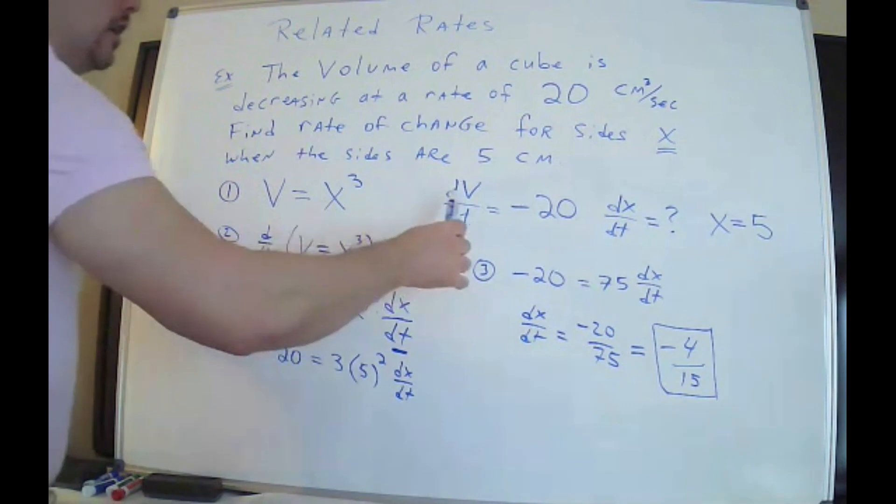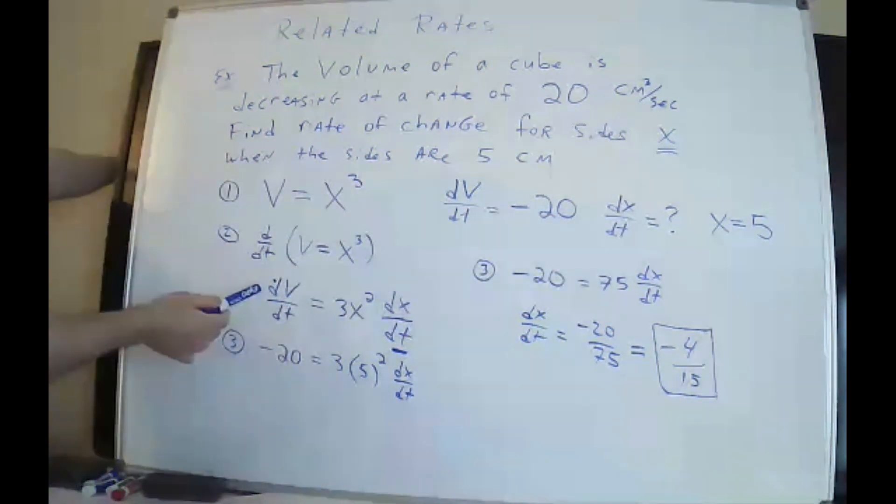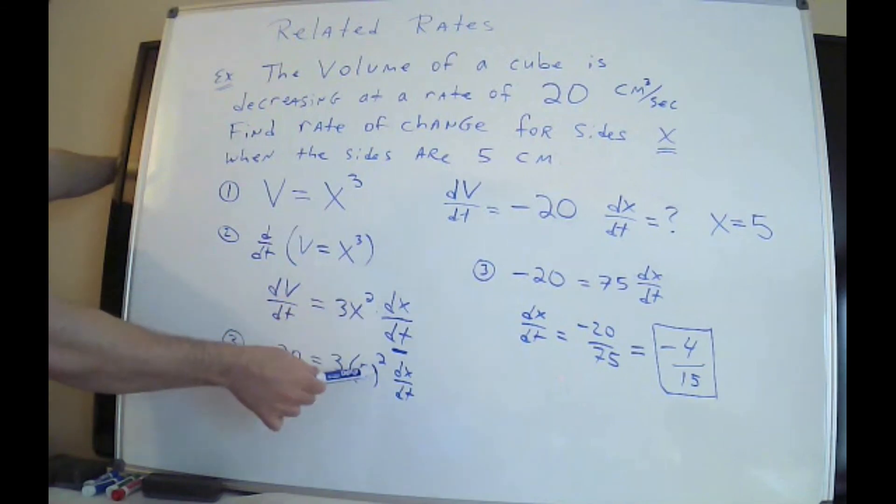So this is what you do, as always. Write the formula. Write the given information. Take the derivative with respect to t. Be careful. Implicit differentiation here. Plug in everything you know, and then solve.